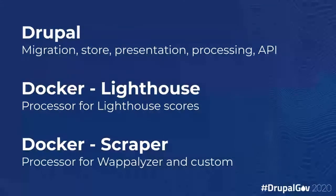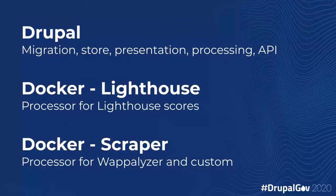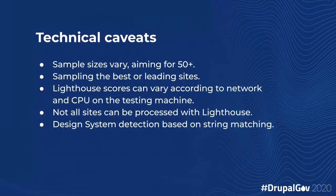Those two processes are running all the time and continually updating the results. Some technical caveats before we jump into the results. The first couple are around statistics. We understand the importance of getting good numbers in each of the categories. We've aimed for like 50 or 100, as many as we can reasonably get.